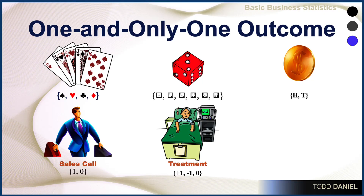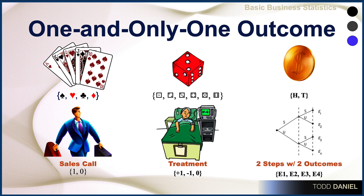Or we're looking at patients in a hospital. The treatment they receive could make them better, make them worse, or result in no change — but one and only one outcome can occur. In an experiment with two steps, each step having two possible outcomes, we know there are a total of four possible outcomes from any of those combinations. But again, one and only one of those outcomes will occur for each repetition of our statistical experiment.